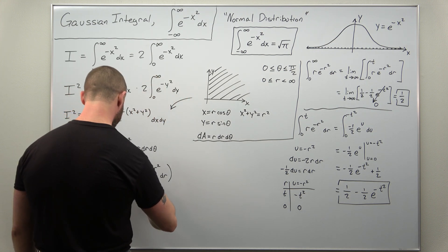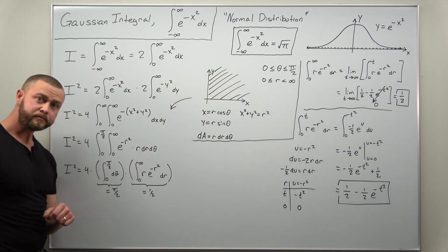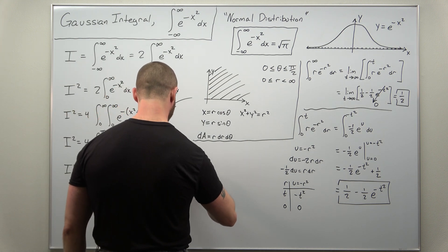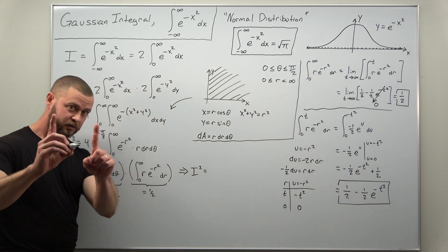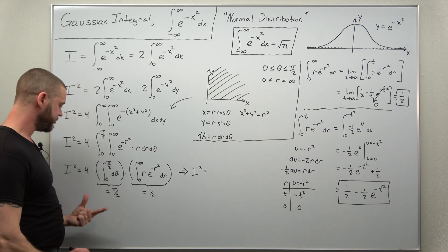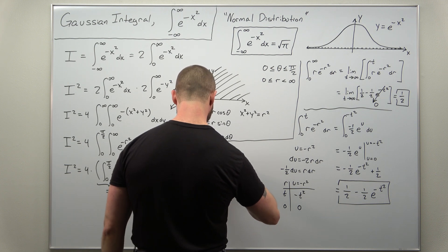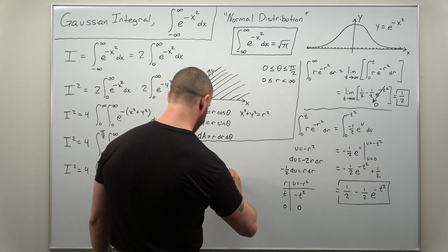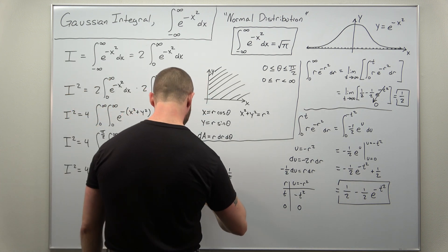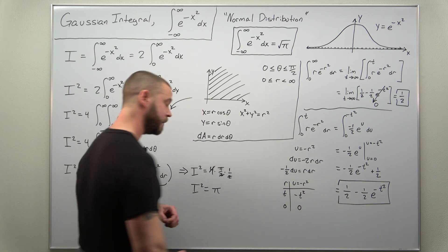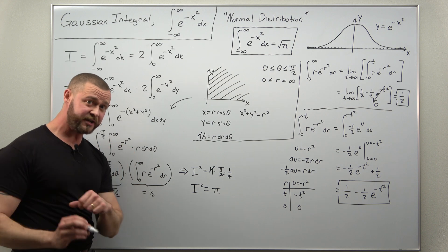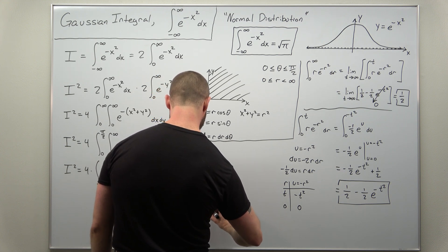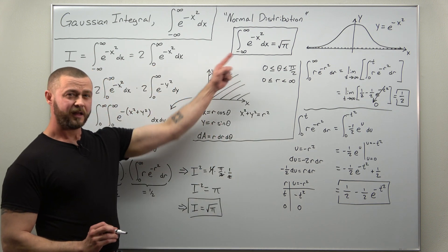Plugging that back in, we have I squared equals four times pi over two times one half. Simplifying, the factors of two and four cancel, and we get I squared equals pi. To get the value of the Gaussian integral, which is just I, we take the square root, and we get the value of the Gaussian integral as square root of pi.